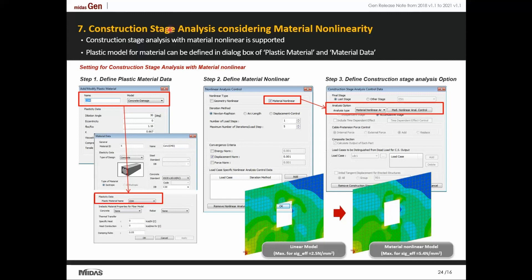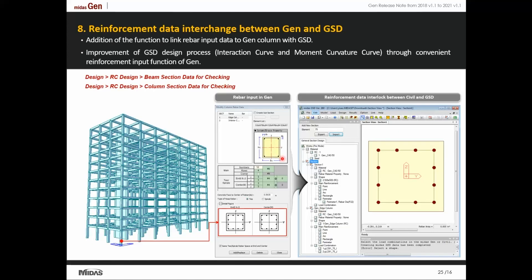Let us now check the next update regarding construction stage analysis. Earlier we had the option of linear or non-linear analysis. Now we have also incorporated material non-linearity in construction stage analysis. The rebar data provided in Gen can now be linked to the General Section Designer (GSD), making it easier to provide reinforcements in GSD and thus generating better interaction curves and moment-curvature curves.